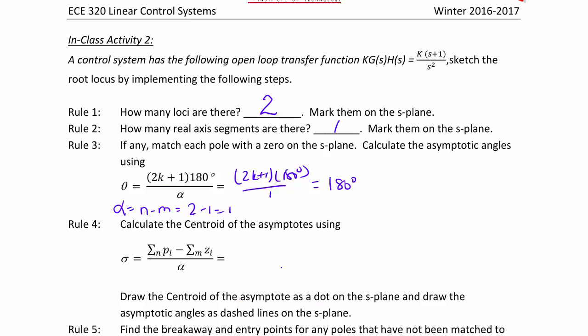Rule 4, calculate the centroid of the asymptotes using σ equals the sum of the poles minus the sum of the zeros divided by α. So the sum of the poles is 0 plus 0 minus the sum of the zeros, negative 1, over 1. So we have that the centroid is equal to 1.